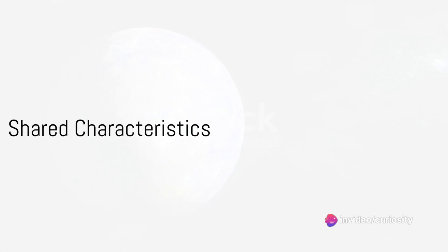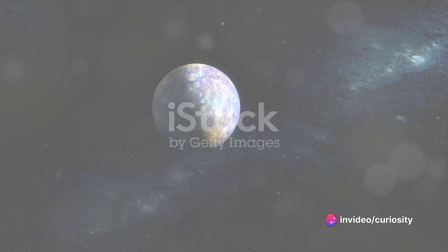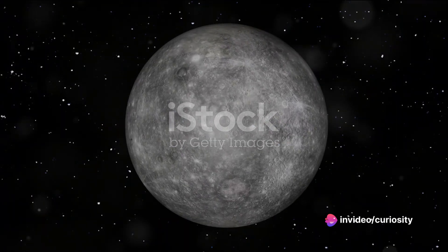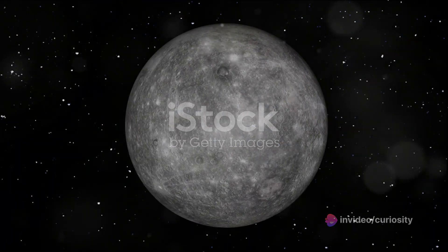Yet, despite these stark differences, Earth and Mercury share a few intriguing similarities. Both are terrestrial planets, meaning they have a solid rocky surface.